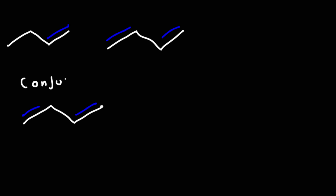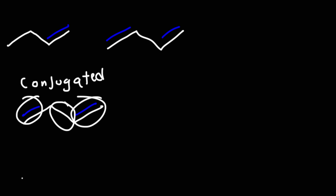In this video, we're going to talk about the 1,2 and the 1,4 addition products with dienes. Let's begin our discussion with dienes. Here is a typical alkene — it has one double bond. A diene is basically an alkene but with two double bonds. This particular diene is known as a conjugated diene. The reason why it's conjugated is you have alternating double and single bonds: here it's a double bond, this is a carbon-carbon single bond, and that's a double bond.